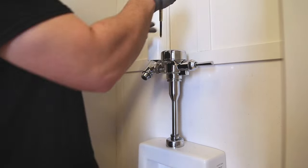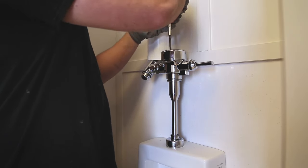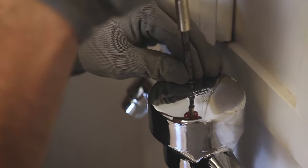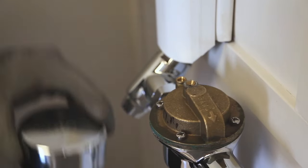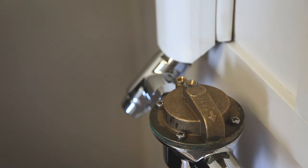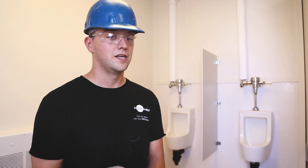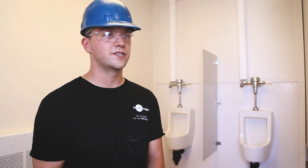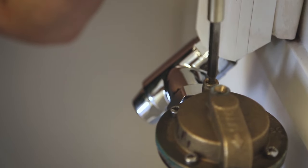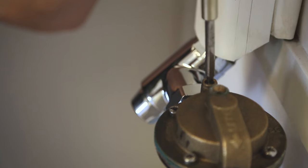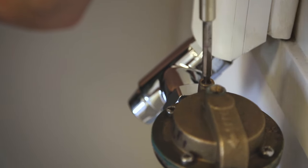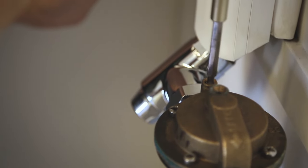You adjust the length of the flush on the urinal by first taking the cap off the top of the flush valve. Once you do that, you'll see on the left there is a screw that takes a flathead screwdriver. If you want your flush to be longer, you will adjust the screw down. If you want your flush to be shorter, you loosen the screw off.